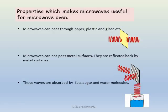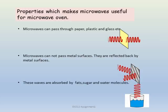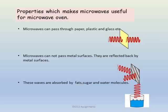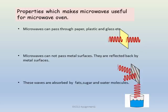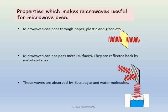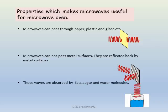Properties which make microwaves useful for microwave ovens: Microwaves can pass through paper, plastic, and glass, which makes it easier for cooking because we use utensils generally made of plastic or glass. Microwaves cannot pass through metal surfaces — they are reflected back by metal surfaces, which is why we do not use any metal utensils inside a microwave. These waves are absorbed by fat, sugar, and water molecules.